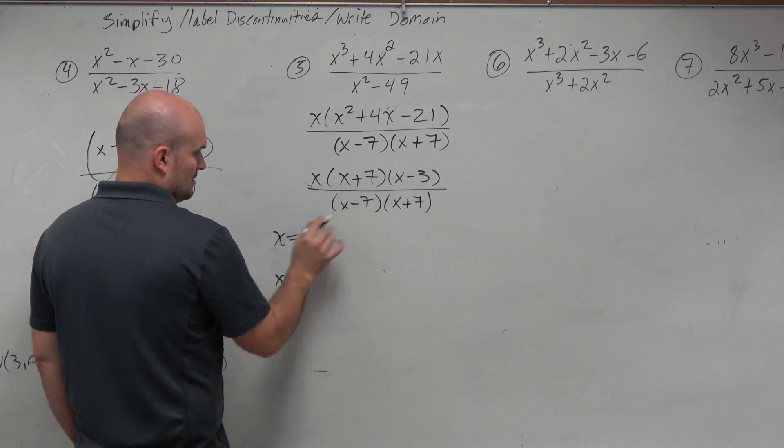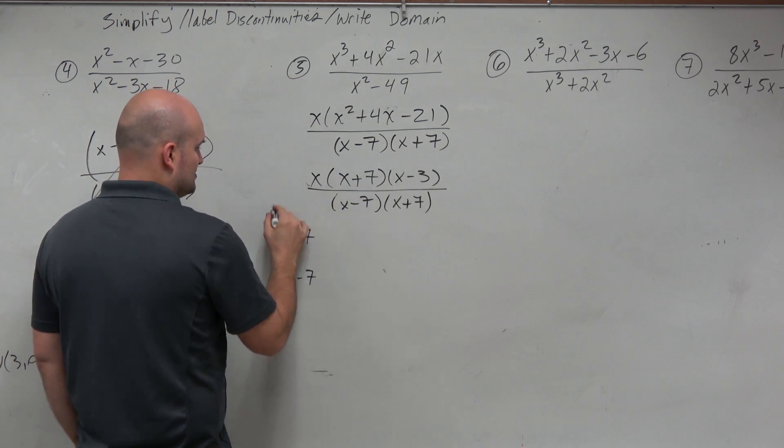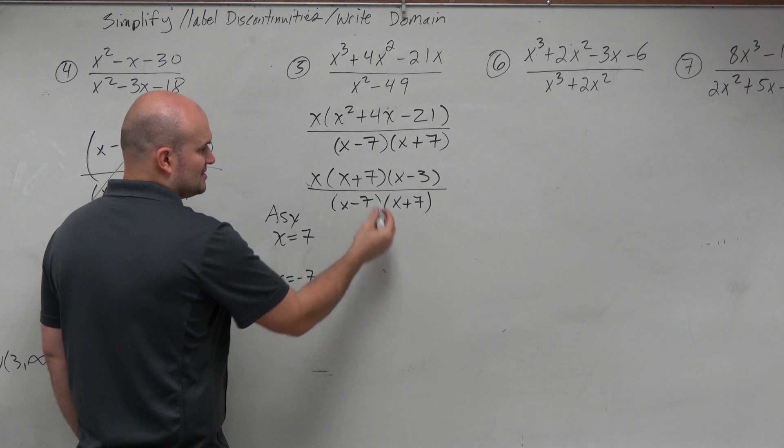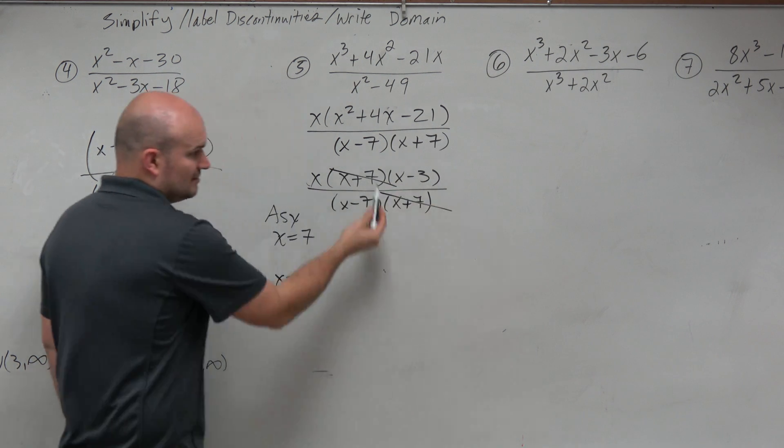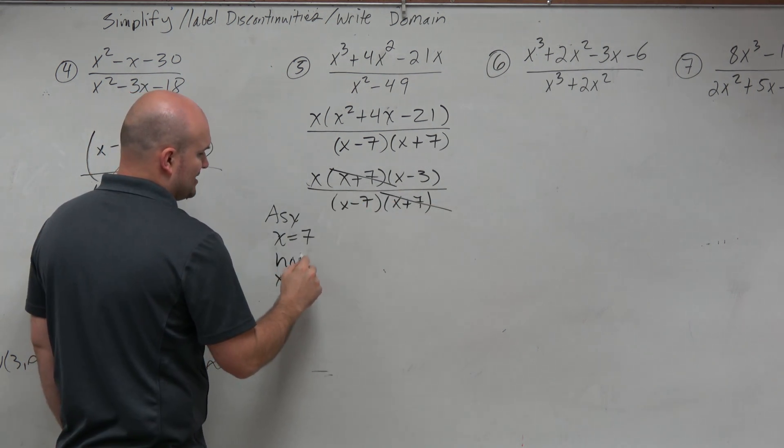At x equals 7, which makes that 0, that is going to be my asymptote because it doesn't divide out. However, x plus 7 is in the numerator and the denominator, so that is my hole.